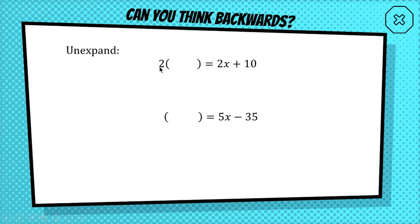I'm giving you a hint that out the front is a 2. I want you to think what would go inside this bracket here, inside these parentheses, so that when you expand it, by multiplying everything by 2, you get 2x plus 10.